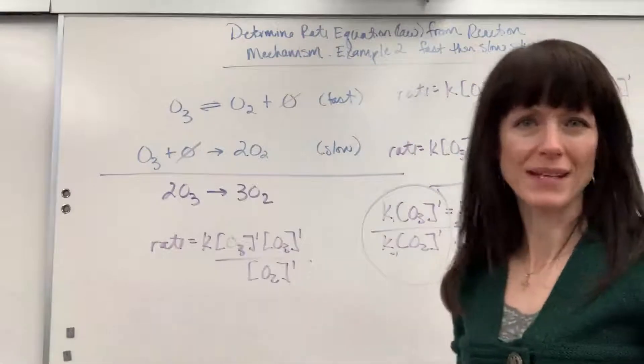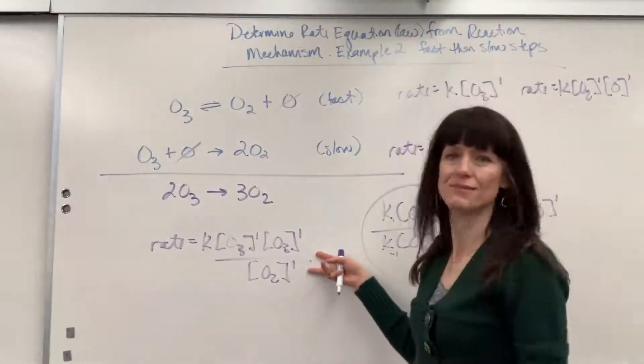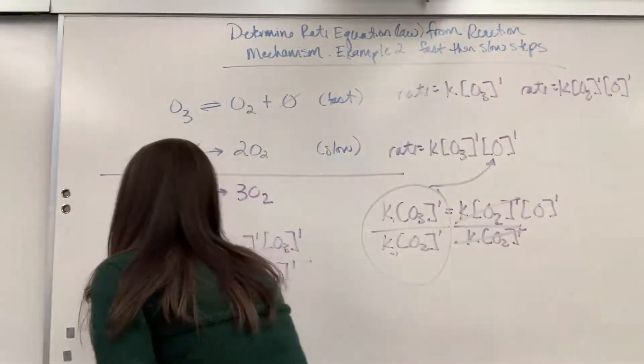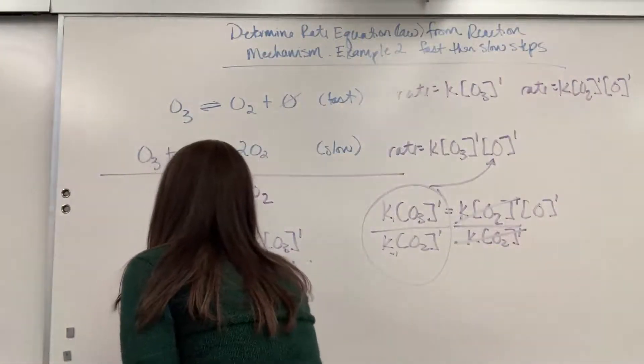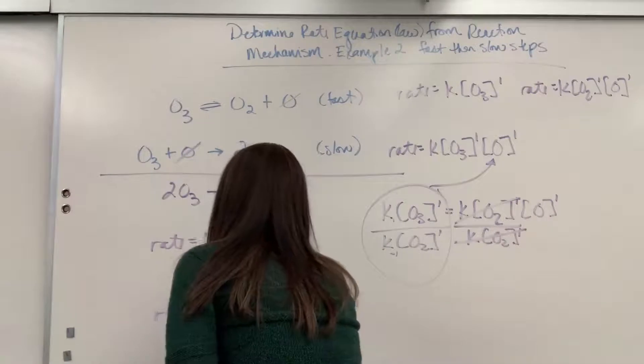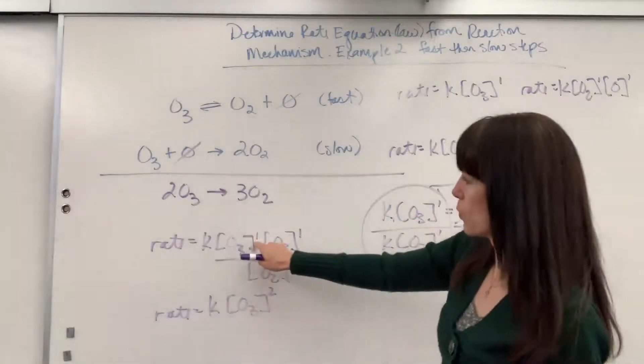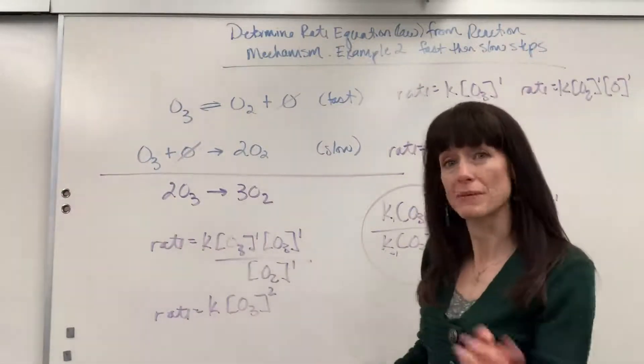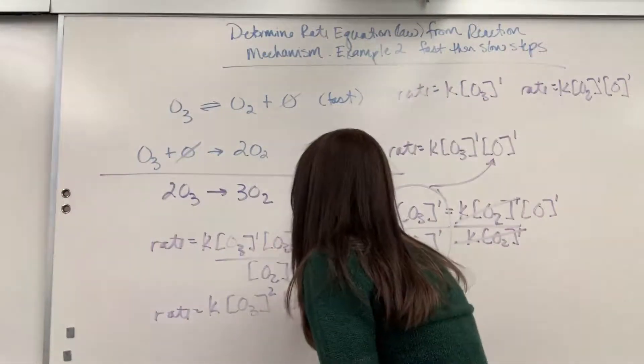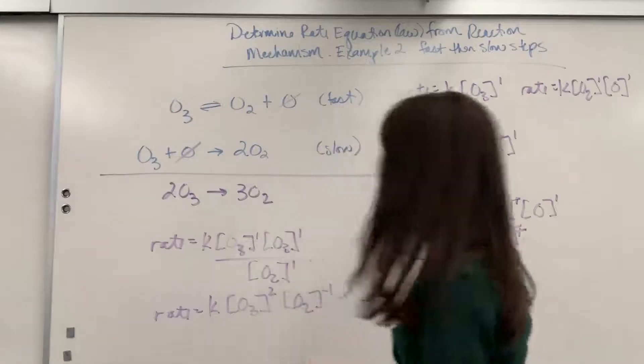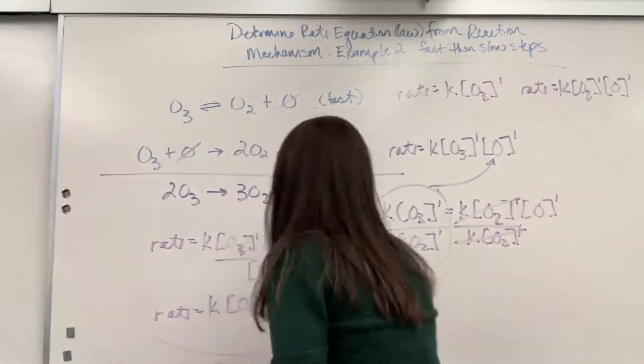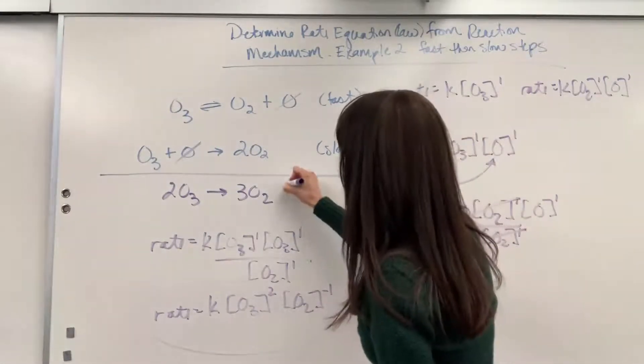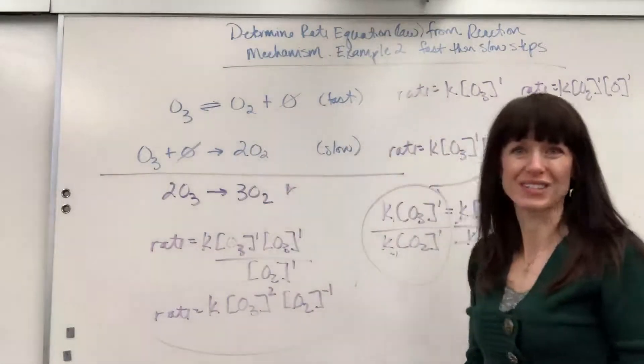So there we have it. Now, it's a little messy. You could definitely write that. You'll get credit for it. But we can clean it up. So let me clean it up for you. We will have rate equals K. And it will be O3 to the second order. So 1 plus 1 for the exponents gives me 2. And then this, if I bring it into the numerator, becomes a minus 1 times O2 to the negative 1. And that would be the rate law. Notice there's no intermediates in that. So that's the rate law for this overall reaction right there.